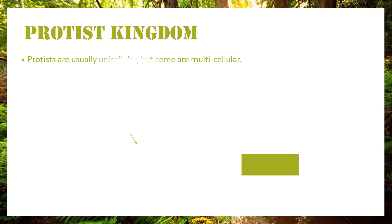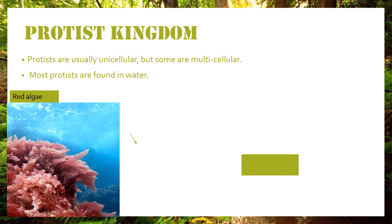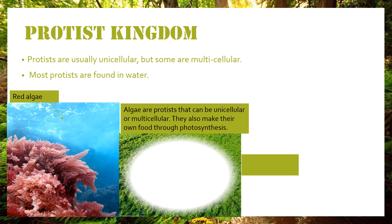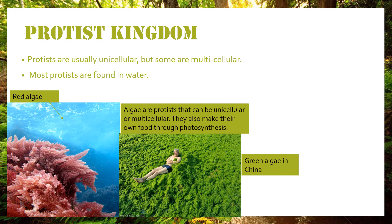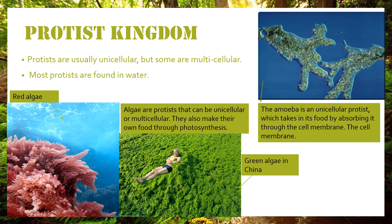The protist kingdom. Protists are usually unicellular, but some are multicellular. Most protists are found in water, such as red algae. Algae are protists that can be unicellular or multicellular. They also make their own food through photosynthesis. Green algae in China. The amoeba is a unicellular protist, which takes in its food by absorbing it through the cell membrane.